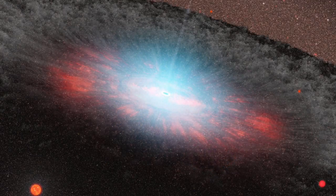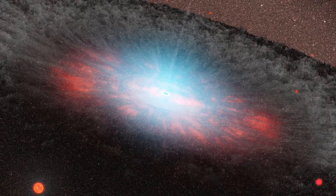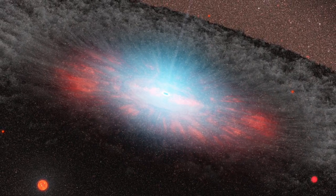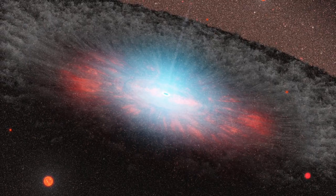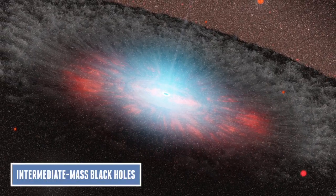Recent studies show that there is a third type of black hole. This black hole has a mass between the stellar mass and the supermassive. They are mainly referred to as an intermediate black hole.